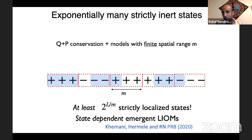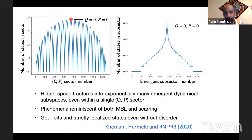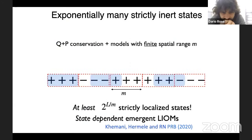You can ask how many states like this there are. You can make a lower bound: carve up your system into blocks of size M, and each block can be either all plus or all minus. That straightaway gives you a number of states exponential in system size, and each of those is a product state in the charge basis, and it has to be an exact eigenstate of any quantum dynamics with these two conservation laws and spatial locality. You can also do a transfer matrix calculation to get exact results. But there are a lot of them.